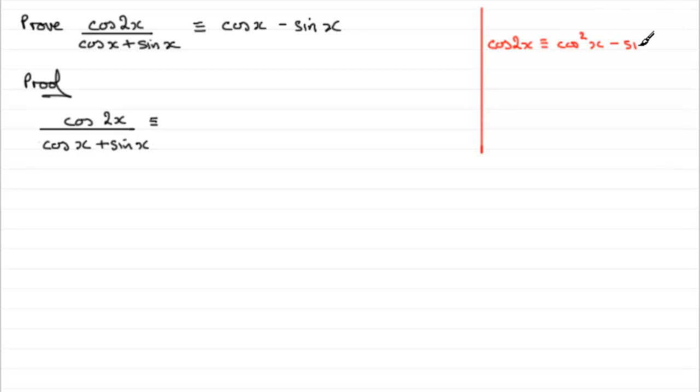It's also identical to 2 cos squared x minus 1, and 1 minus 2 sine squared x. So the question is which one of these three do we take? Well, when you look at what we've got here, a mixture of cosines and sines, I'd really want to take this mixture here.